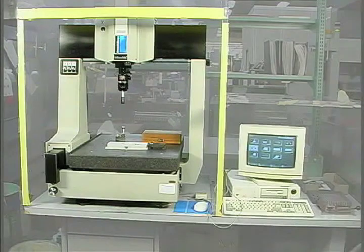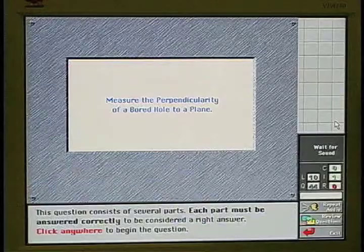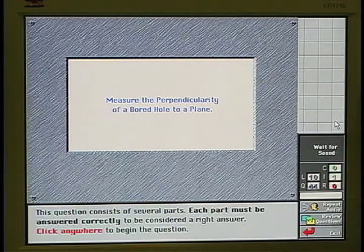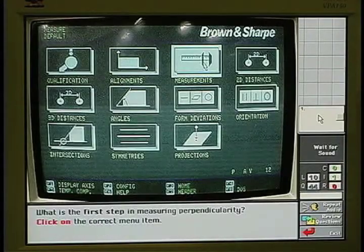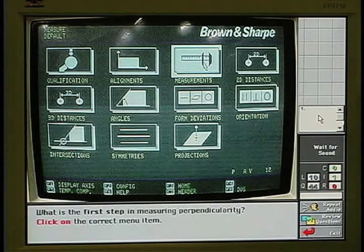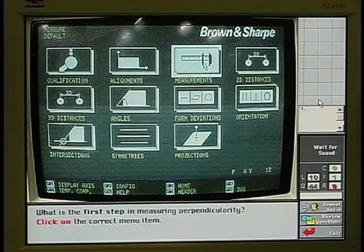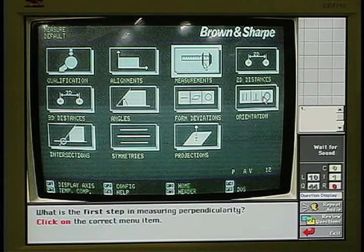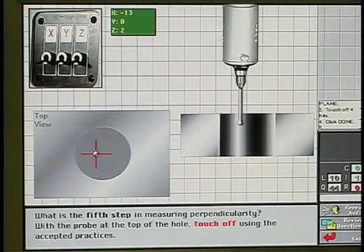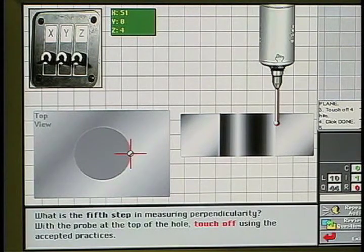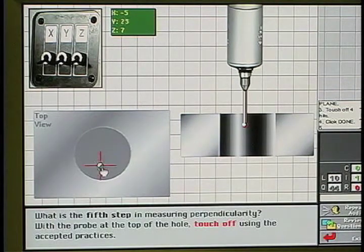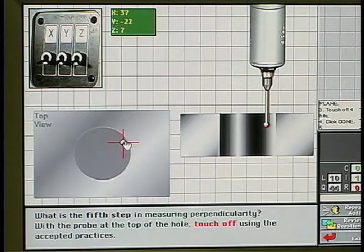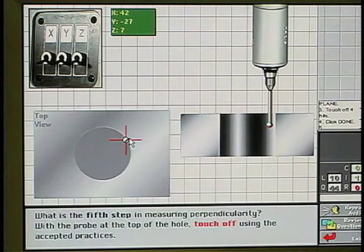Here you see a coordinate measuring machine. For this question, the student must perform a simulated measurement of perpendicularity by selecting the correct measurement sequence from the computer. What is the first step in measuring perpendicularity? Click on the correct menu item. That's the right answer. Then they must move the probe by looking at the top and side view of its position relative to the hole in the workpiece. The image of the probe is moved to the correct location to touch off on the workpiece surface. And if they are wrong, incorrect answer.